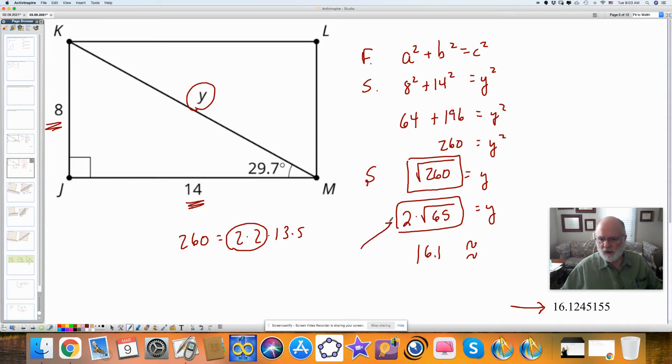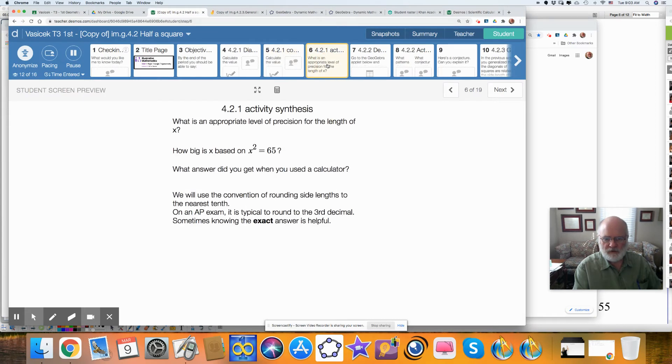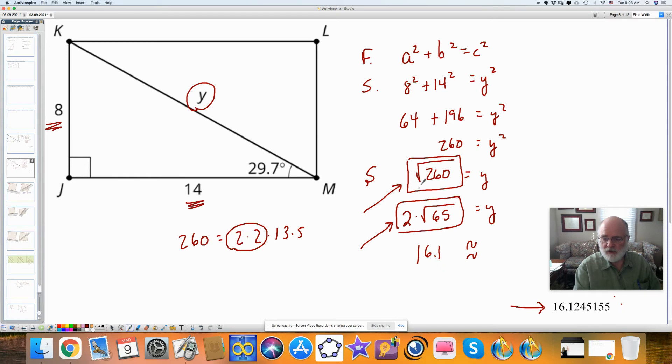The exact answer is right here, and right here. This is better because it's simplified. This is still an approximation. So the question we have in this activity is, when we synthesize it, what's an appropriate level of accuracy, of precision? How many decimals should we take it to? Do we list all 8 of them that are on the calculator, or whatever? And how big is the 65? If x squared is 65, how big is x? What is the square root of 65? It's about how much? About 8, when you use a calculator. We will use the convention in this class of rounding to the nearest tenth, unless otherwise specified. On an AP exam, it's typical that you would round to the third decimal. And sometimes knowing the exact answer, like this, is also useful.